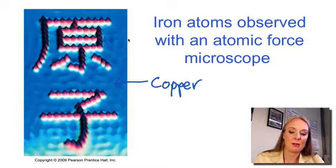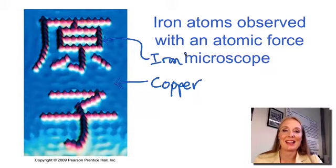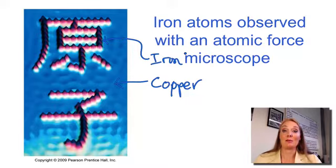These are the iron atoms. If you can read Kanji characters, you can probably see that they actually spelled out the word atom by pushing the iron atoms around. So we now actually have visual evidence that there are atoms and that those are the smallest particle of matter that exists. If you divide an atom in half, you actually change the type of element that you have.